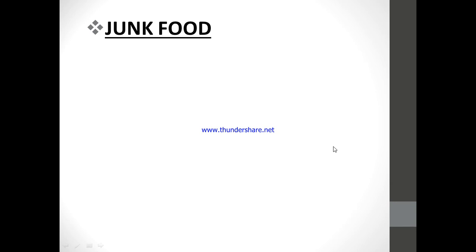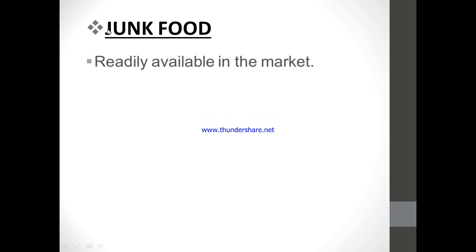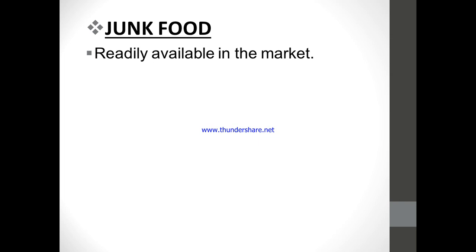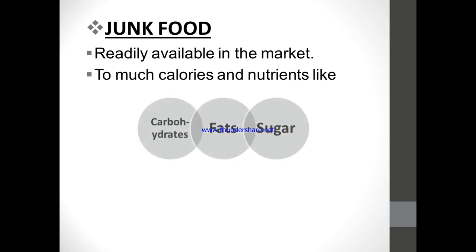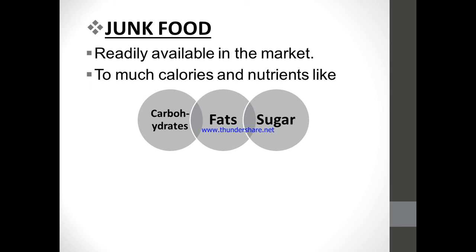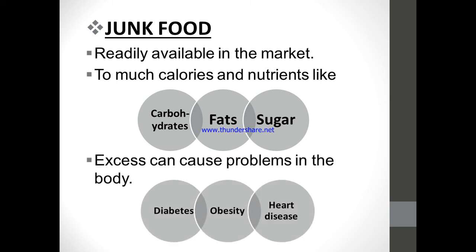An example of an unbalanced diet is junk food, which is readily available in the market and which we take very readily. We should not take this diet on a daily basis, as it is not beneficial for us. Junk food contains too many calories and nutrients like carbohydrates, fats, and sugar in excess. Too much intake of these nutrients eventually results in diabetes, obesity, and heart diseases, as discussed in the previous chapter.